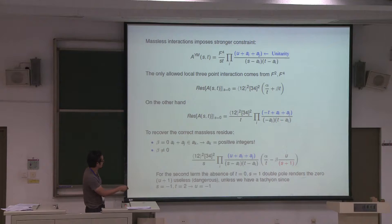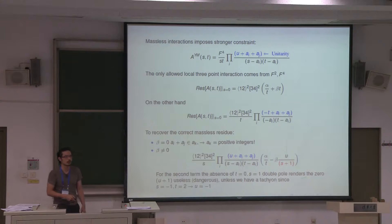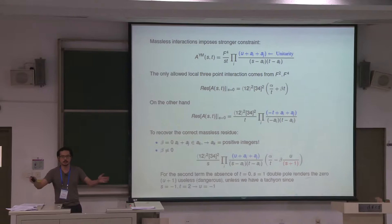The fact that these terms must cancel tells you there are two possible solutions, depending on whether beta is zero or non-zero — whether or not there's an F-cubed interaction. If beta is zero, each combination must have something in the denominator to cancel, meaning a_i plus a_j must equal something in the denominator. Thinking about it, this equation has only one solution: positive integers. So you immediately get string theory with an integer-spaced spectrum, and this gives you the superstring.